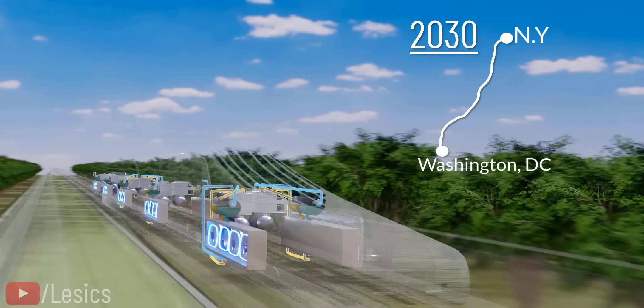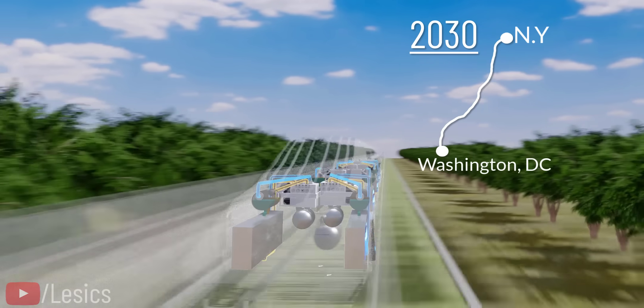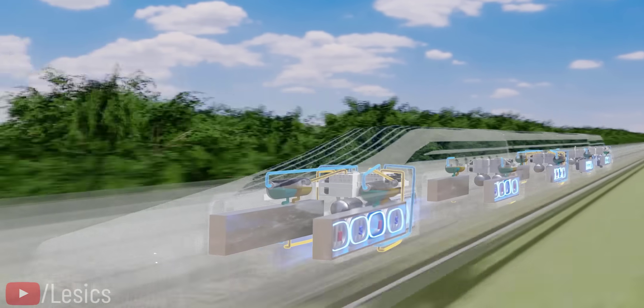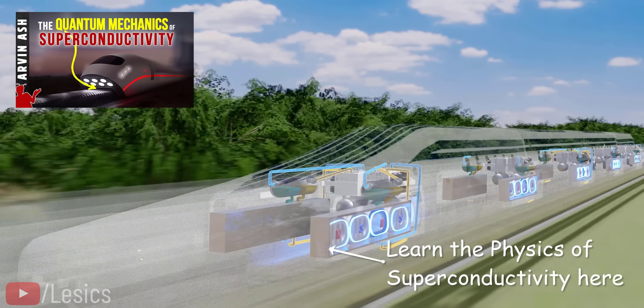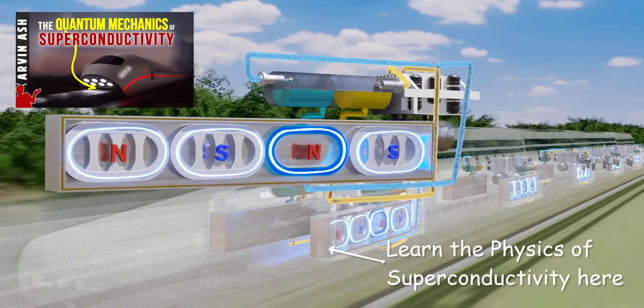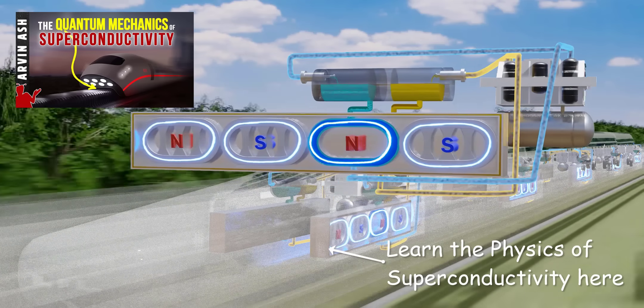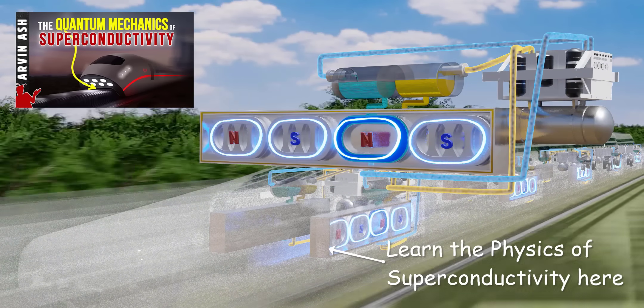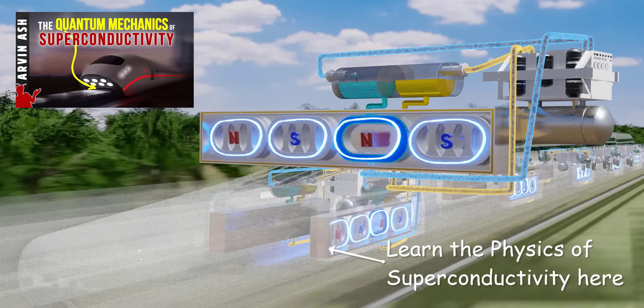The SC Maglev train technology revolves around the physics of superconductivity, which is a crazy and amazing phenomenon. To understand what superconductivity is in a logical way, please check out this interesting video from Arvind Ash. Also, please don't forget to be part of our team. Thank you!